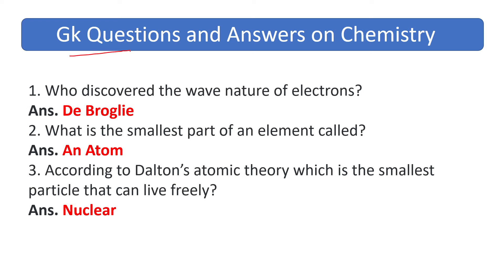GK questions and answers on chemistry. The wave nature of electrons is covered — the answer is de Broglie. What is the smallest part of an element called? The answer is an atom. According to Dalton's atomic theory, which is the smallest particle that can live freely? The answer is nucleus.